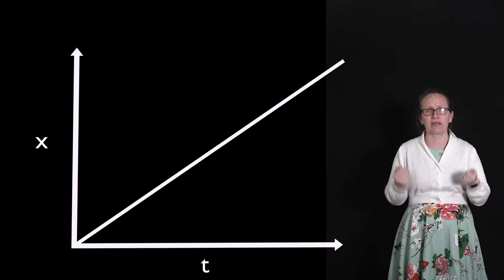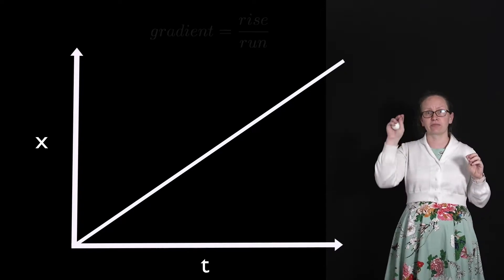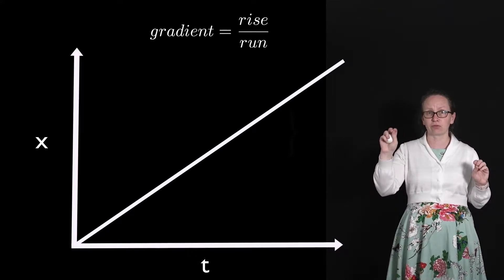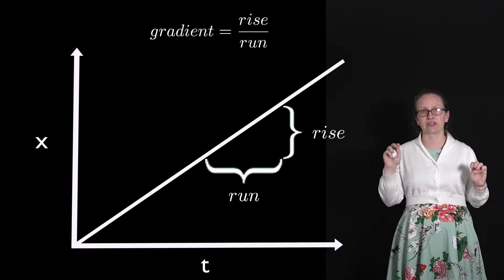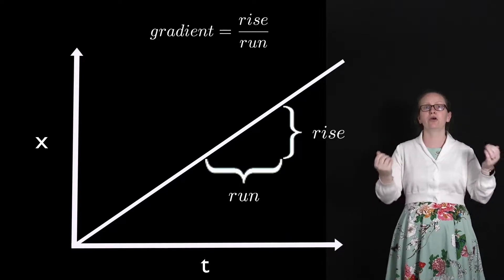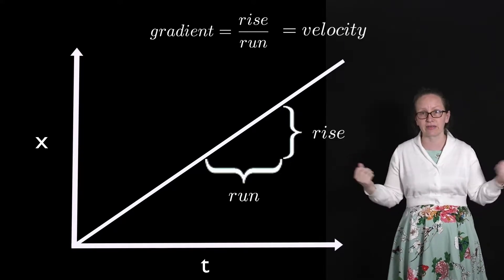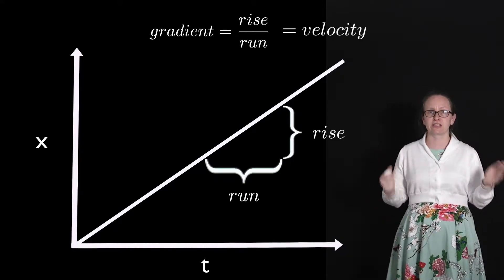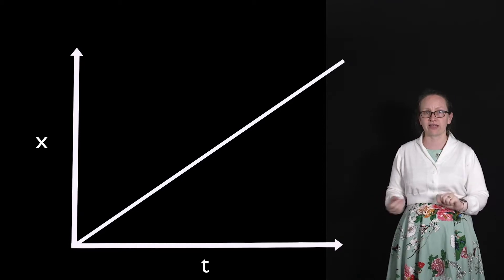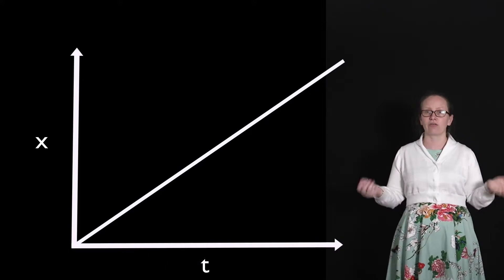We can work out the gradient of our displacement versus time graph. Gradients are given by the rise divided by the run. In this case we've put the displacement on the y-axis (the rise) and time on the x-axis (the run), so our gradient is equal to displacement over time. We know that displacement over time is the velocity — or speed in one dimension. So the gradient of a displacement versus time graph is equal to the speed of the object.